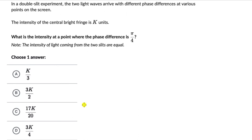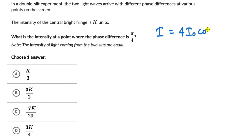Before I get into this, why don't you pause the video and give this one a try. Now, in this one we need to figure out the intensity at a point where the phase difference is π/4, and we know the intensity of the central bright fringe is k units. So first let's write the relation used to calculate the intensity, which is: the intensity at a point equals 4i₀ cos²(φ/2), where φ is the phase difference.